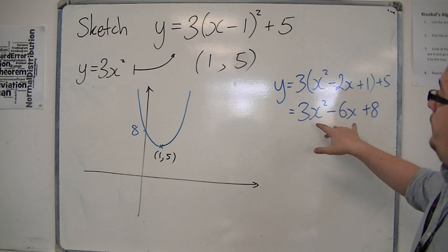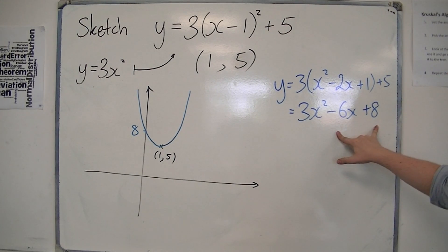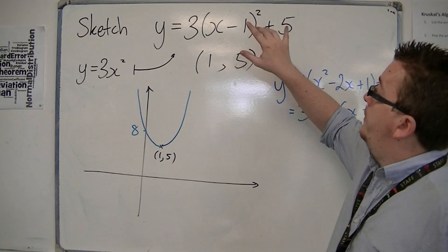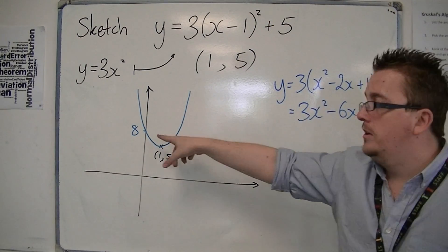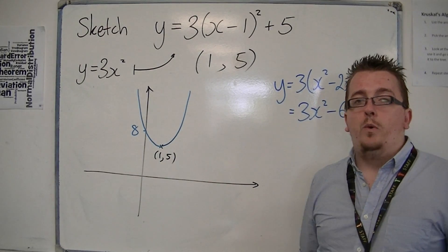So, this is the equation of the curve when it's all multiplied out. And from the completed square form, we get the vertex. And from this format, we get the number that goes from the y-axis.